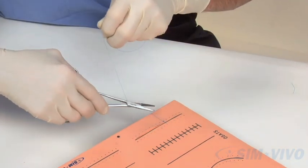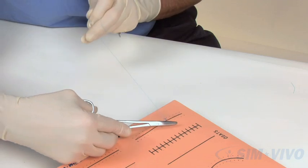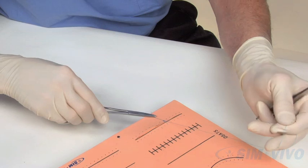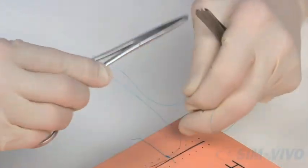Start towards you. Move away from you into the long suture. Start away from you. Start towards you. And after six throws, you will have completed the knot.